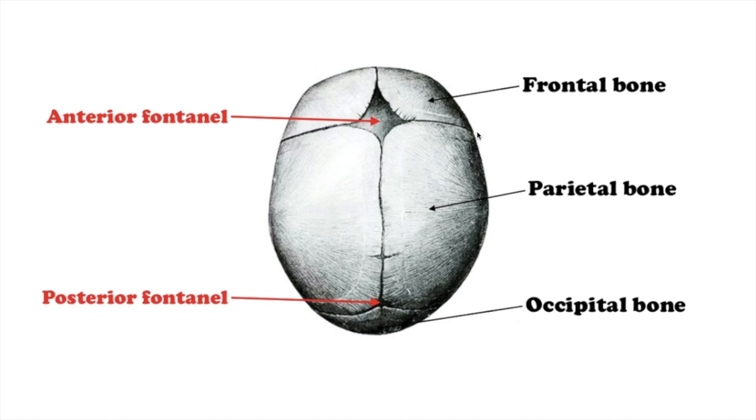Fontanels: A fontanel is a space created by the joining of two or more sutures. It is covered by thick membranes and the skin on the baby's head, protecting the brain underneath the fontanel from contact with the outside world.